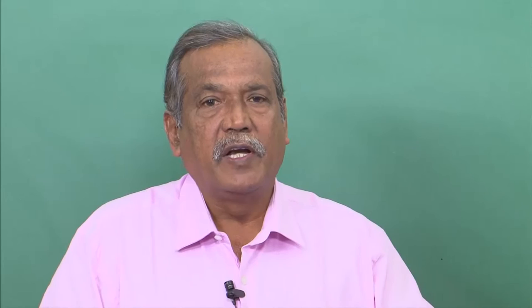Then came a striking phenomenon in 1972 — the identification of synthetic pyrethroids. They are more stable, photostable compounds required in very low quantity compared to earlier conventional insecticides, and they are very effective for biting and chewing insects on various crops. Under this category, bifenthrin, allethrin, permethrin, deltamethrin, and cypermethrin are the important compounds which are in use even today.